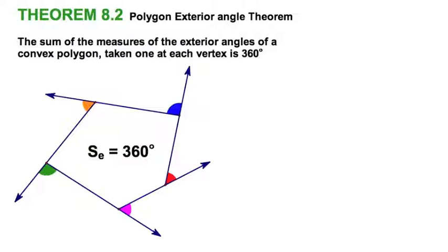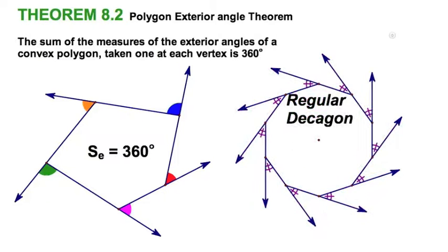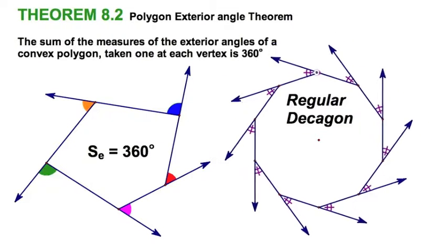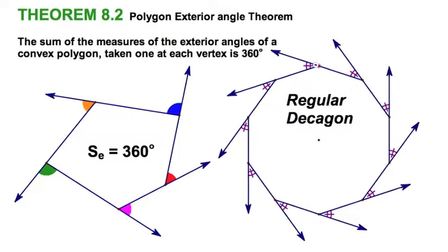Let's suppose we're dealing with a regular polygon. This is a decagon. All the inside angles are the same, but so are all the outside angles. Well, they all add up to 360, and there's 10 of them, so they must be 36 degrees apiece. It's that easy.